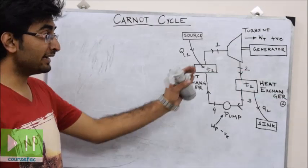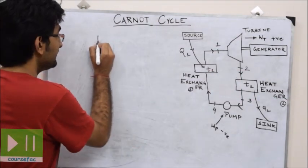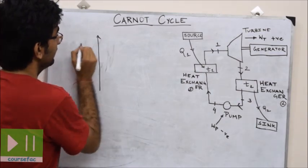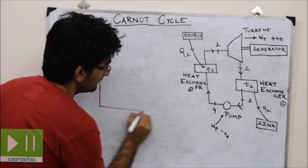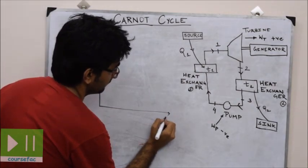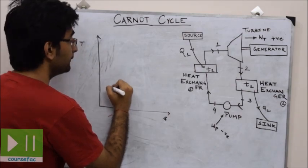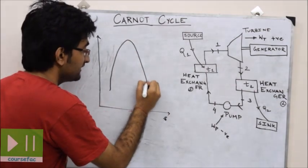We are understanding this diagram through a TS diagram. Let us take the coordinates as T (temperature) on the y-axis and S (entropy) on the x-axis. This curve of the TS diagram was discussed in the previous lecture.